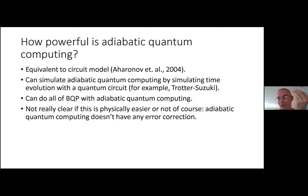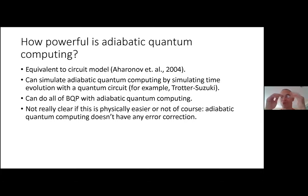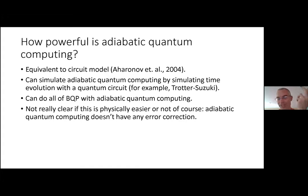Conversely — and this is the surprising part — anything you can do with a circuit, you can do with adiabatic quantum computing. You can come up with carefully chosen H₀ and H₁ so that H₀ has an easy-to-prepare ground state, H₀ and H₁ encode your circuit, and the gap never becomes too small. By measuring final properties you succeed in learning the answer to the computational problem. So they're equivalent in power.